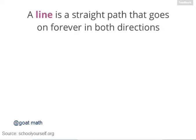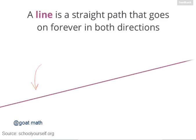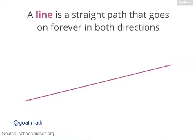A line is a straight path that goes on forever in both directions. Here's an example of a line — it goes on forever in this direction, and it goes on forever in this direction. Since it's impossible to draw a line that goes on forever, lines are usually drawn with arrowheads on either end.